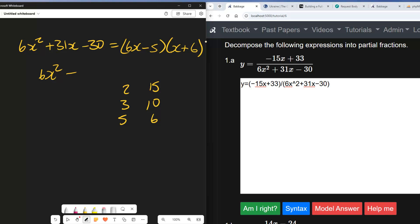6x times 6 is 36x. Minus 5 times x is minus 5x, and minus 5 times 6 is minus 30. And 36 minus 5 is 31, so that is correct.